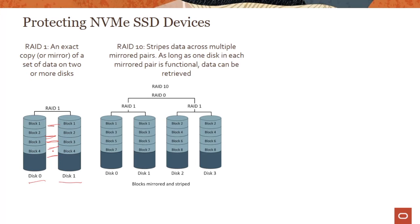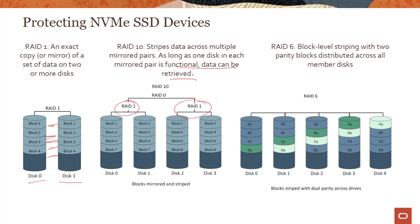RAID 10 stripes data across multiple mirrored pairs — it's a combination of two RAID 1 pairs — and as long as one disk in each mirrored pair is functional, data can still be retrieved, providing extra protection. RAID 6 is block-level striping with two parity blocks distributed across all member disks, which is more complex and takes a performance hit but gives you extra durability.